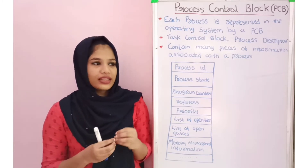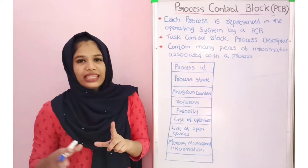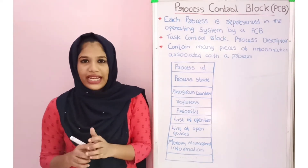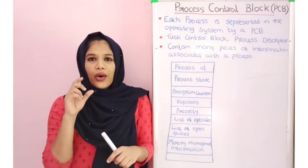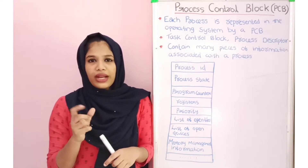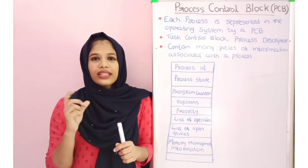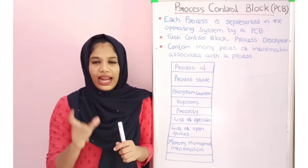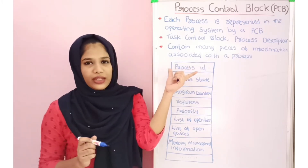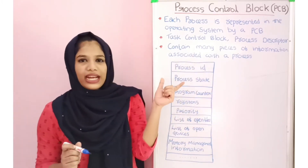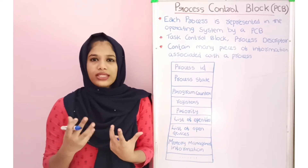I will show you the important information in this block. First, the process ID. Each process can deliver a unique identity — the process ID. We can maintain a serial ID from the individual domain. The process ID is unique and identifies the process by number. That number may be 16 or 32 bits, always dependent on the system. When the process is created, it is assigned this ID.